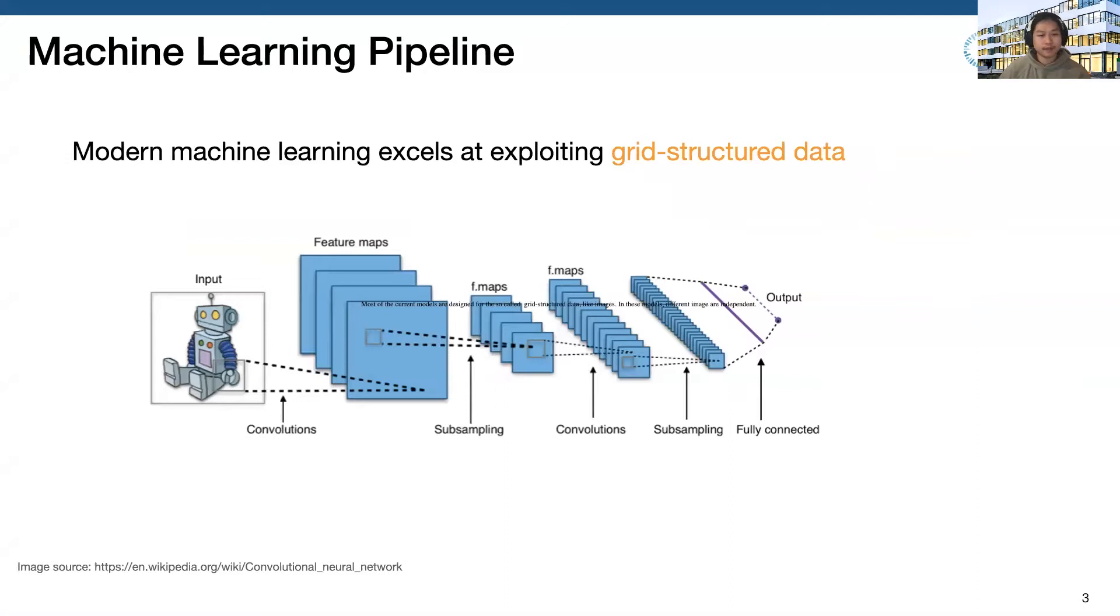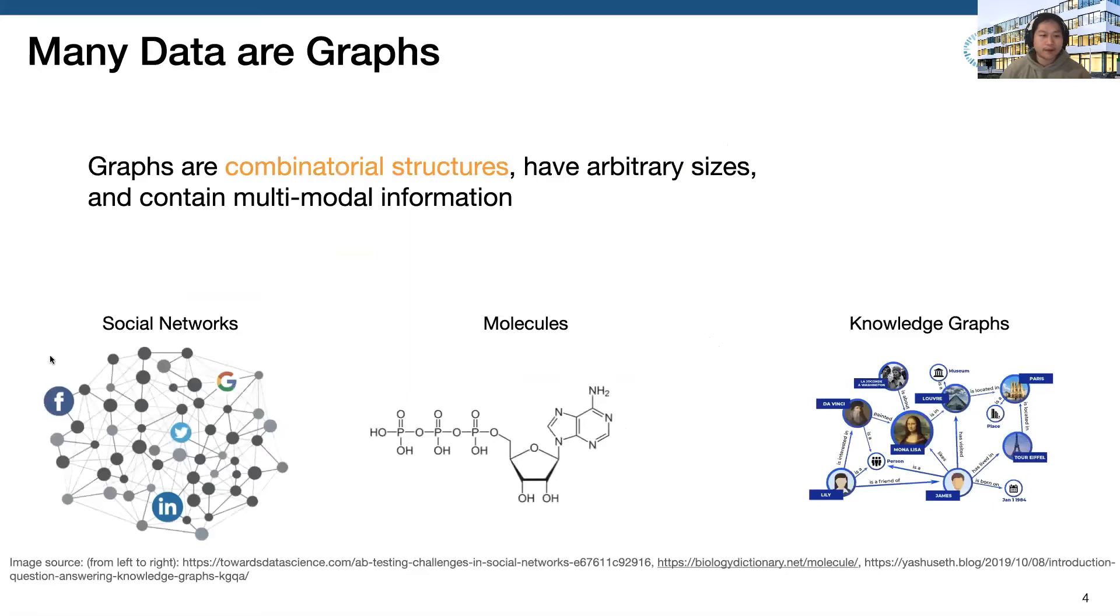Most of the current models are designed for the so-called grid structure data, like images. In this model, different images are independent. However, many data come naturally in the form of graphs. For example, social networks, molecule structures, and knowledge graphs. These data are so powerful, but how can we leverage them?